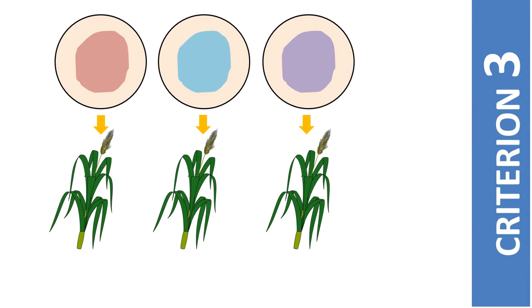These three suspected isolates should be introduced to a healthy plant. The cultured microorganism should cause disease when introduced to a healthy organism.